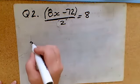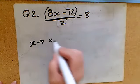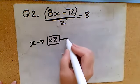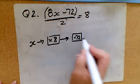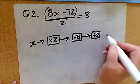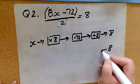So if I start with x, I would times x by 8 so I get my 8x, I would then take away 72, and then I would divide that answer by 2, and out popped the number 8.